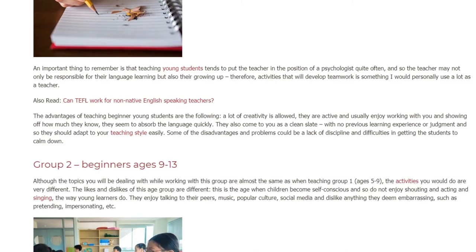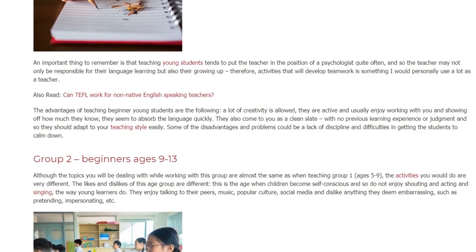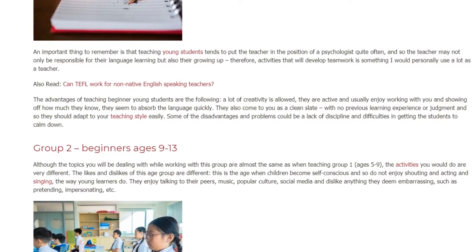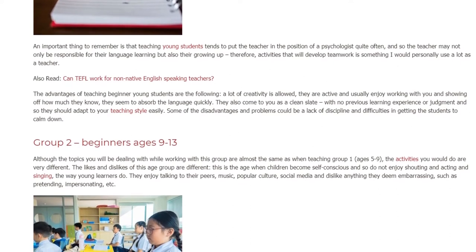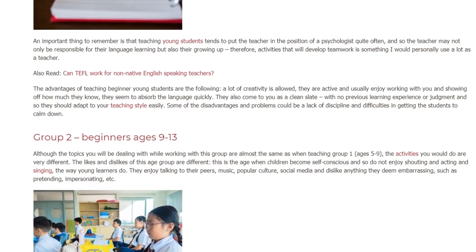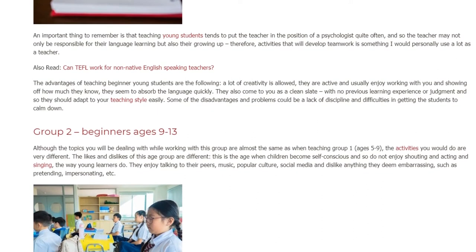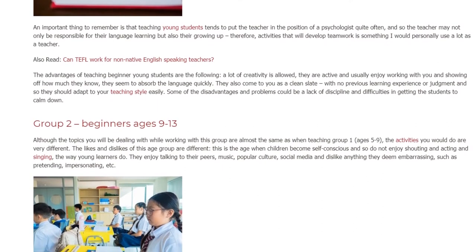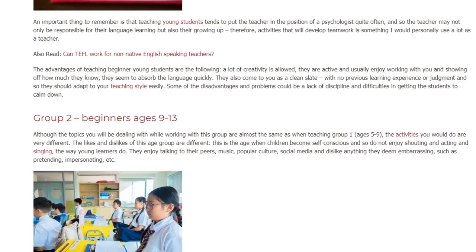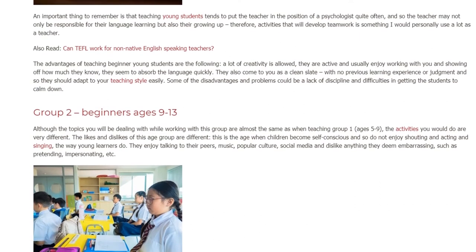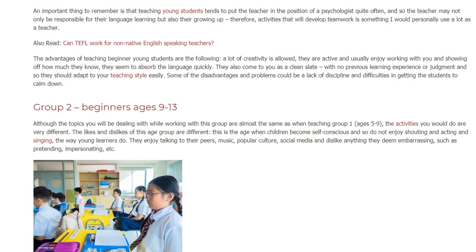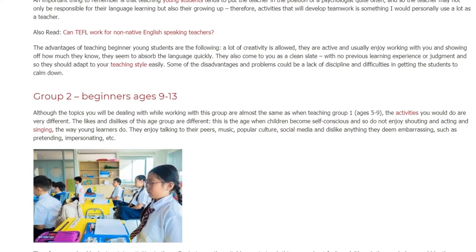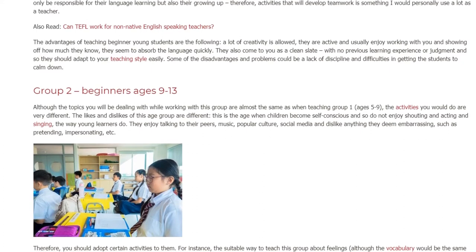Group 2: Beginners Ages 9–13. Although the topics you will be dealing with while working with this group are almost the same as when teaching Group 1, ages 5–9, the activities you would do are very different. The likes and dislikes of this age group are different; this is the age when children become self-conscious and so do not enjoy shouting and acting and singing the way young learners do. They enjoy talking to their peers.